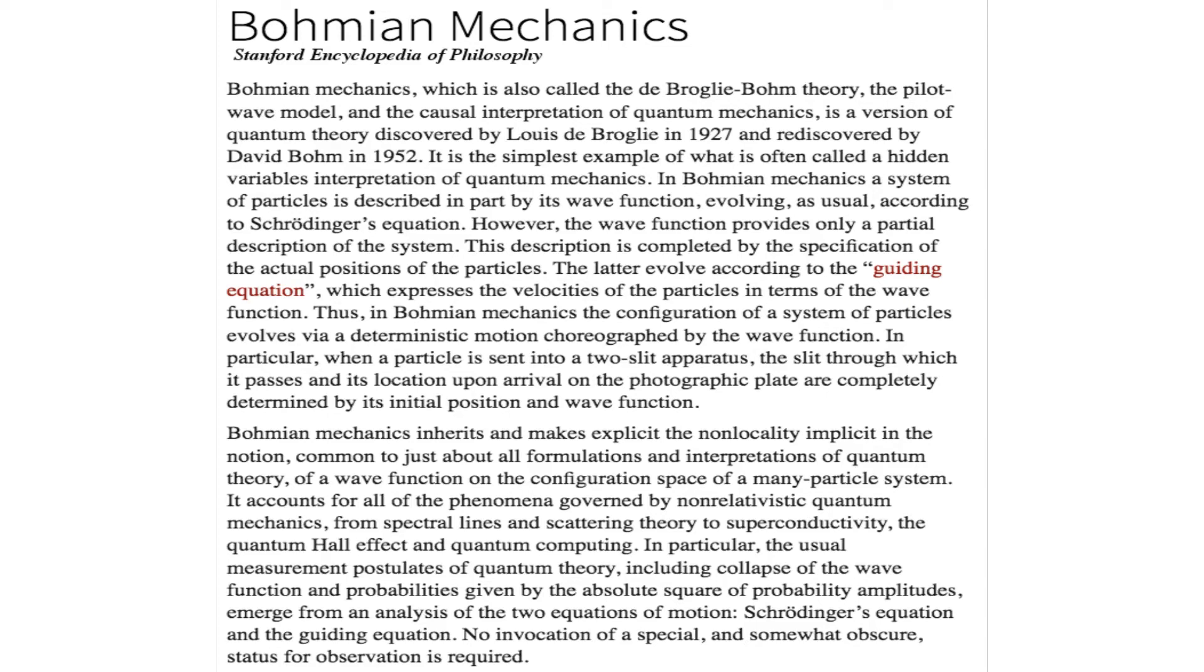Bohmian mechanics, per se, is an alternative to non-relativistic quantum mechanics. Modern quantum theories tend to be quantum field theories, which can generally work alongside special relativity. Traditional quantum mechanics is simpler to convert into a quantum field theory, but this statement obscures some outstanding issues. For example, the apparent fact of entanglement seems to violate special relativity.